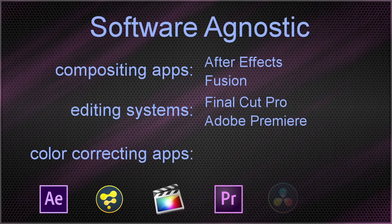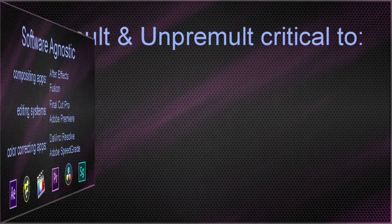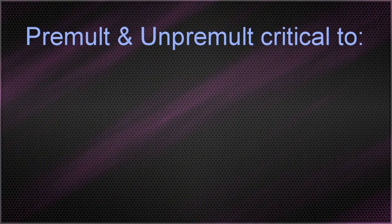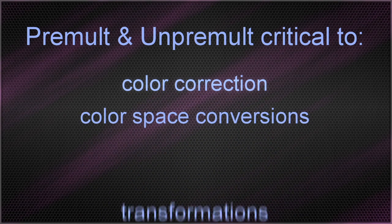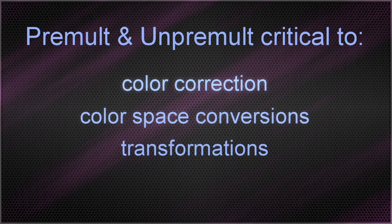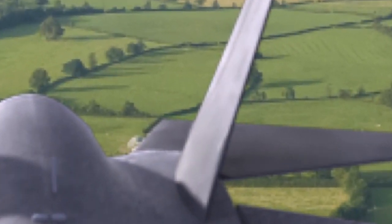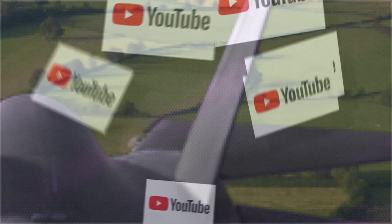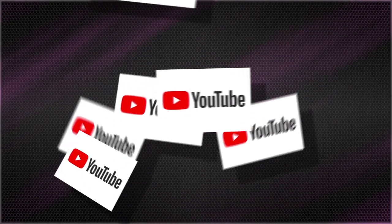And even color correcting apps like DaVinci Resolve and Adobe SpeedGrade. The premultiply and unpremultiply operations play a critical role in color corrections, color space conversions, transformations, and filtering operations. Getting it wrong introduces artifacts, but artists have long found this topic both confusing and full of misinformation.